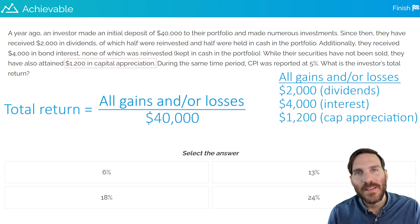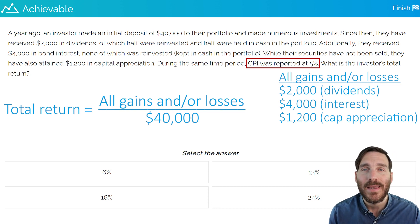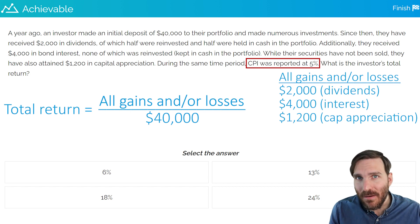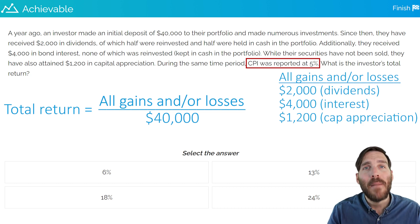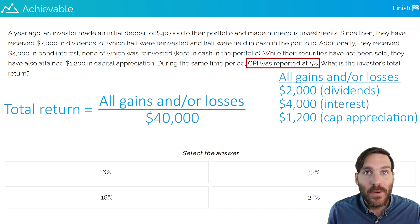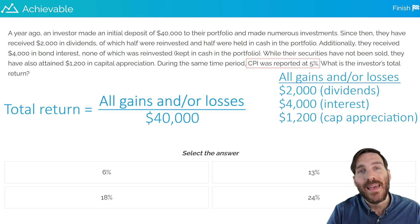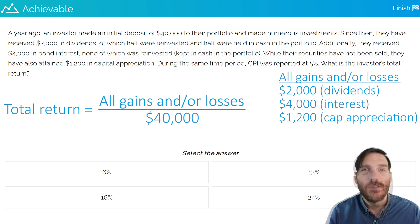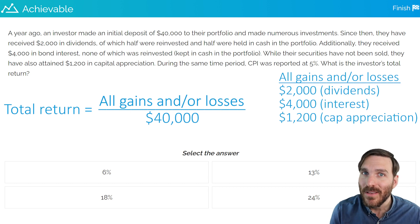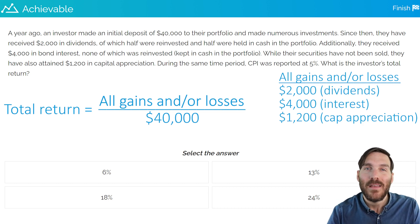Now, the second-to-last sentence mentions CPI — the Consumer Price Index — which is a reflection of inflation, the rising cost of goods and services in an economy. This would be an important figure if we were asked about the real rate of return or the inflation-adjusted return. Both of those are basically total return minus the going inflation rate. But again, that's not what the question is focusing on. Total return does not factor in inflation into its calculations, so we will disregard that. Be mindful that test questions will oftentimes give you a piece of information — maybe a few pieces — that are not relevant to the answer. Part of this process is being a filter and knowing what the important stuff is and what the non-important stuff is. And basically, that's the only piece of information in this question that is not relevant to the answer.